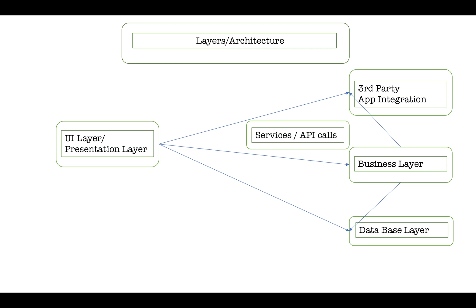For example, the UI layer is where you as a user interact — like searching for a product on Amazon. The next layer is the business layer where business logic is implemented. Underneath that is the database layer where data is stored. It may also happen that your application interacts with a third-party application — for example, Google Maps for location or a weather service. You can mention that as well; this communication often happens through API calls.